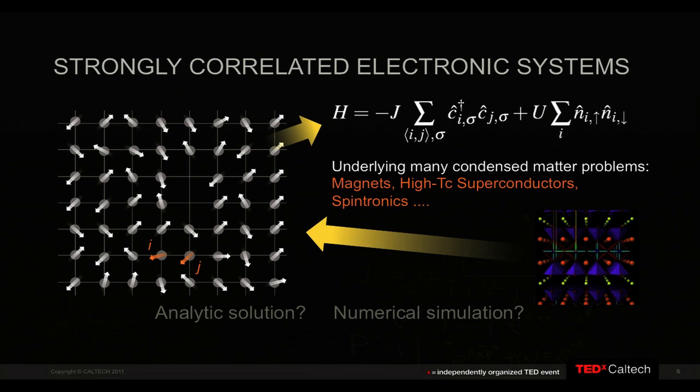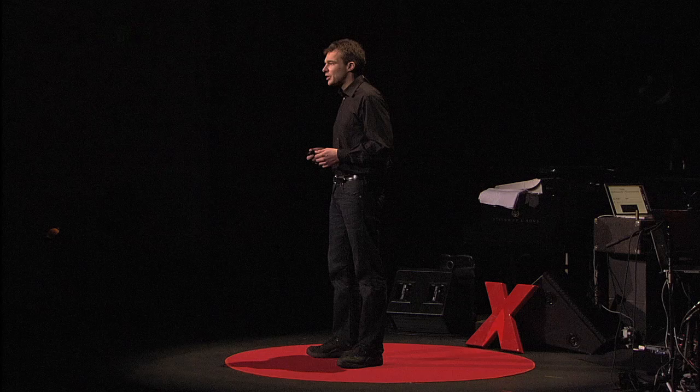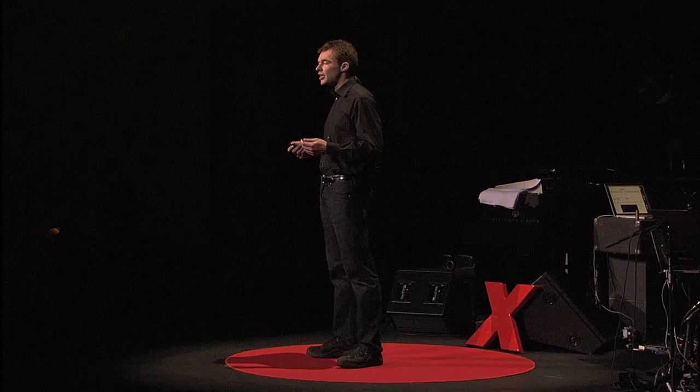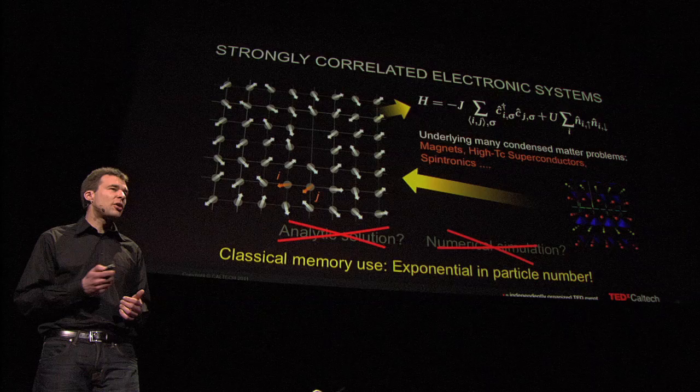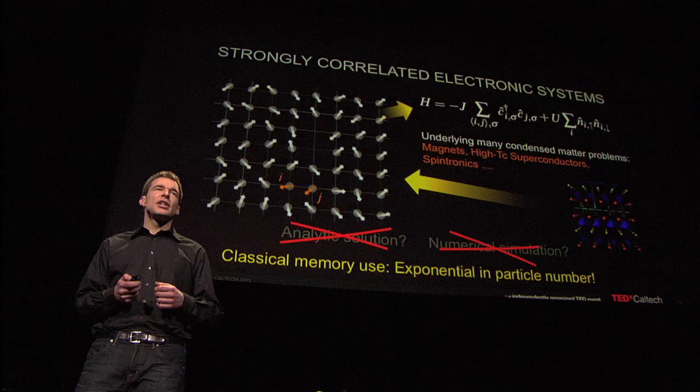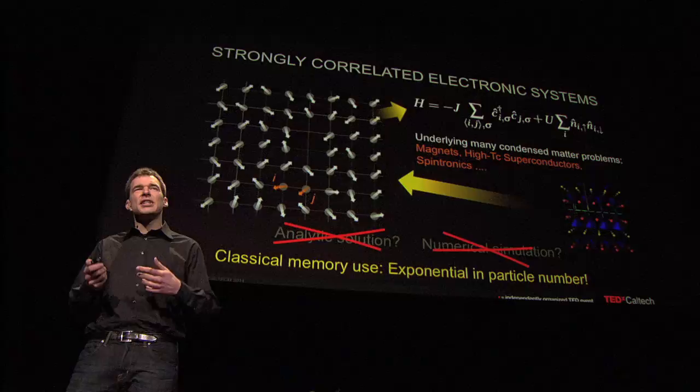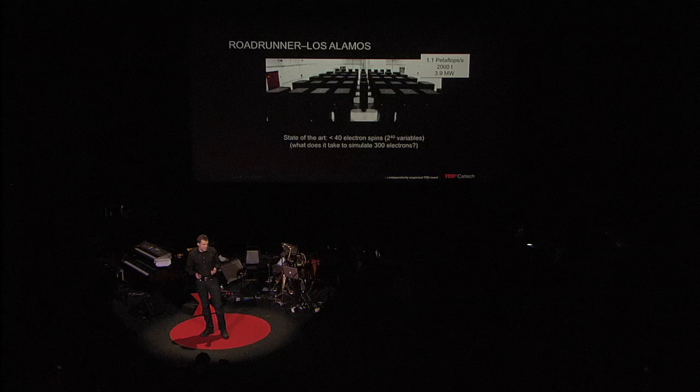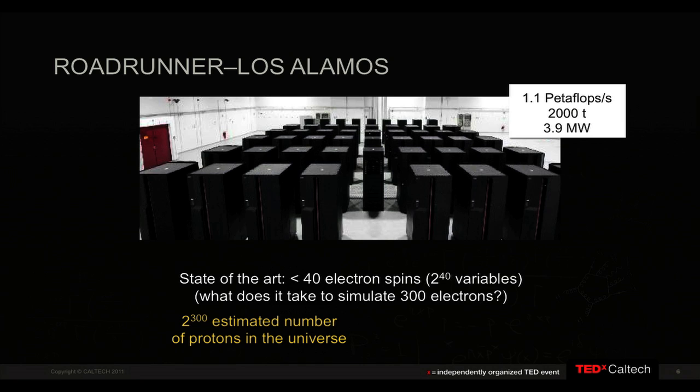But we cannot solve this analytically. Today we have very powerful computers, so why don't we do a computer simulation? Unfortunately — and this is the problem Richard Feynman was talking about — this is also not possible as far as we know. The reason is that this is fundamentally a quantum mechanical problem. In quantum mechanics, electrons are not necessarily at one given location, but can be in several states and several locations at the same time. You have to account for all possible combinations of positions simultaneously in the computer's memory, and this number of combinations increases very quickly as you add more electrons. The most powerful computers today, consuming the power of an entire small city, cannot simulate a system larger than about 40 electrons.